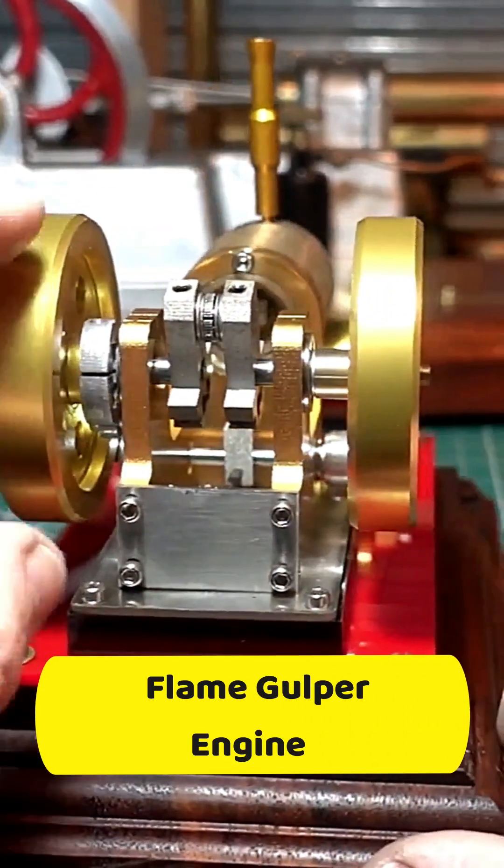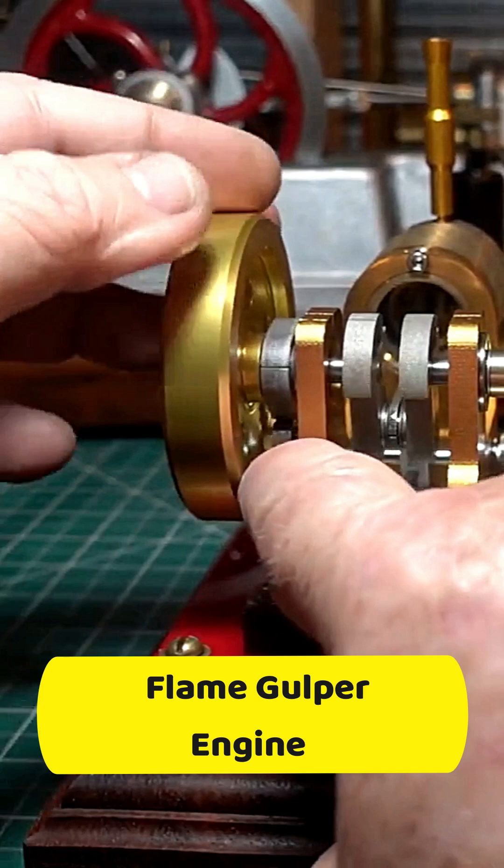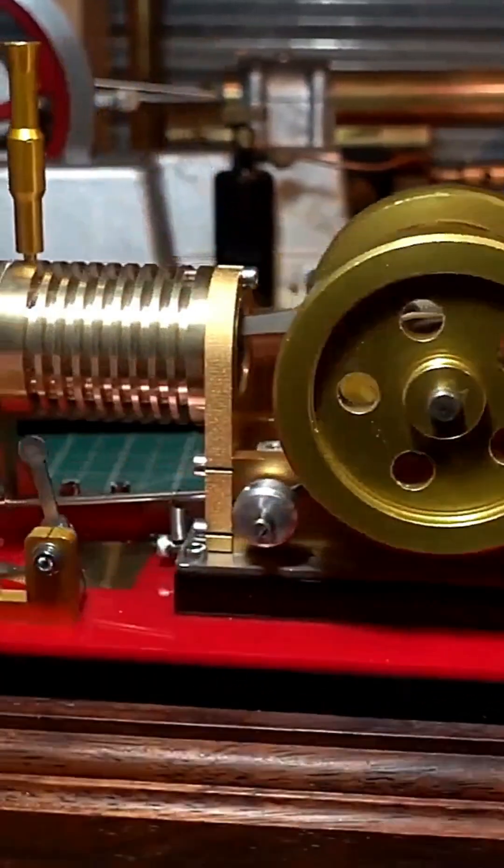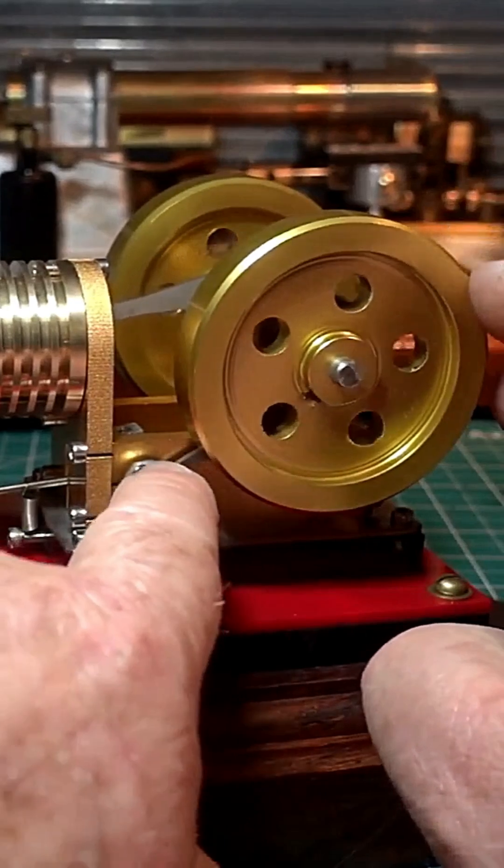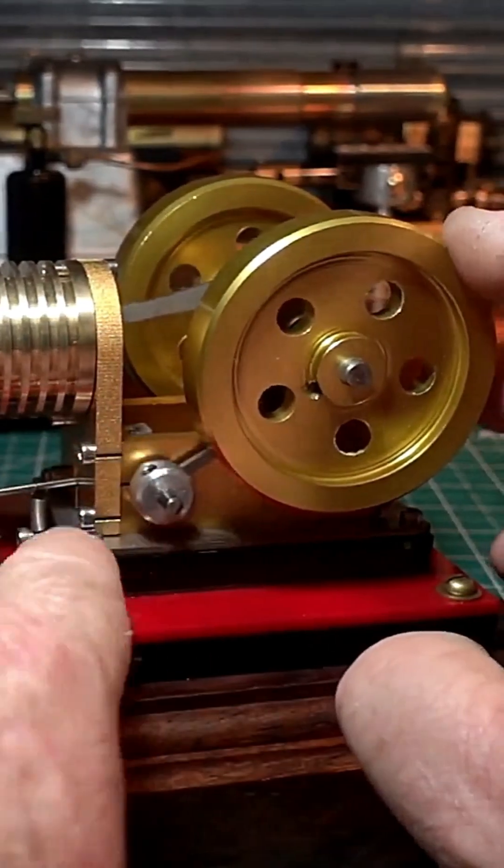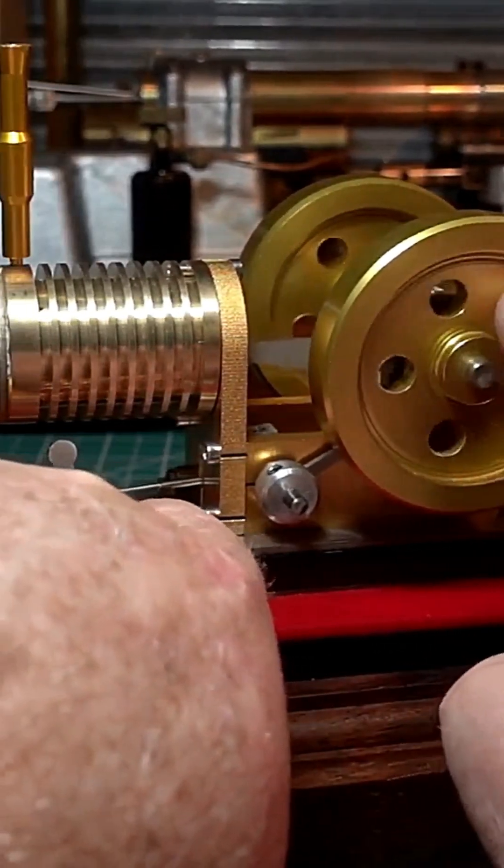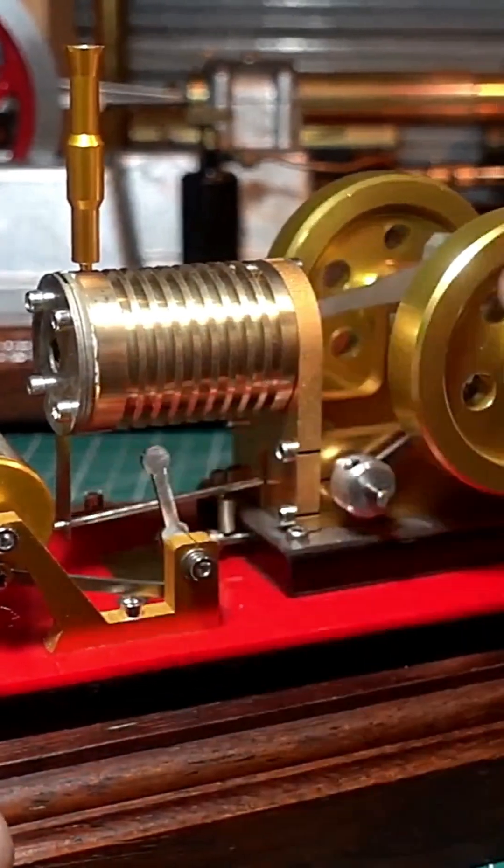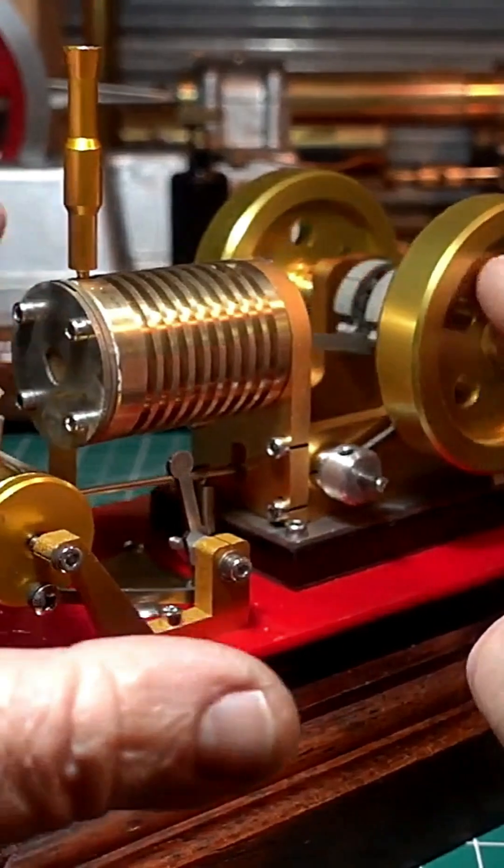How they work: there's a cam there, you can see the cam goes over, hits that roller. That roller comes down here, there's an axle going through there, operates that spring which pulls that lever up and down.